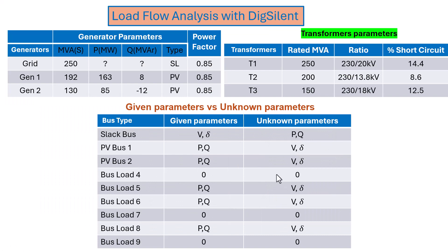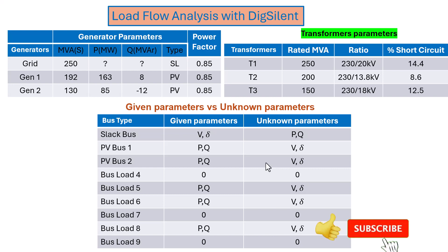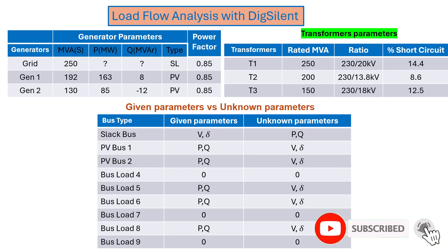When you do a load flow analysis using the Newton-Raphson mathematical method, you deal with given parameters and you search for the unknown parameters. You do this through iteration until you find convergence — a point where your values no longer change — meaning you've reached the steady-state condition.